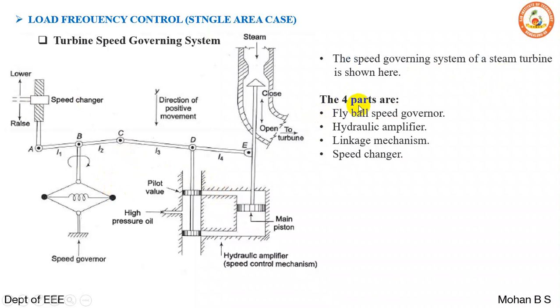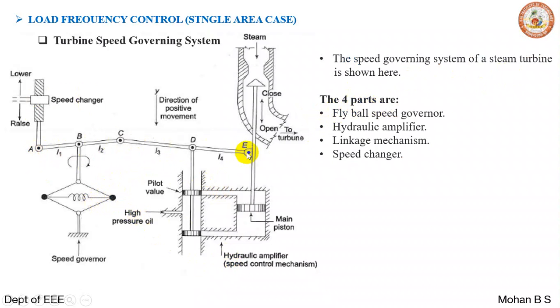The four main parts of the speed governing system are: the fly ball speed governor, the hydraulic amplifier, the linkage mechanism with points A, B, C, D, and E, and the speed changer.